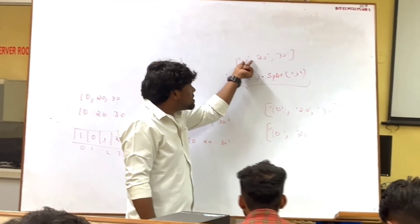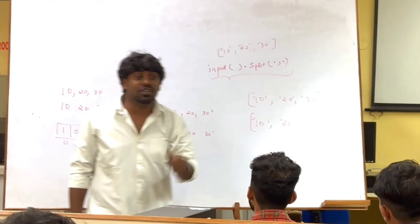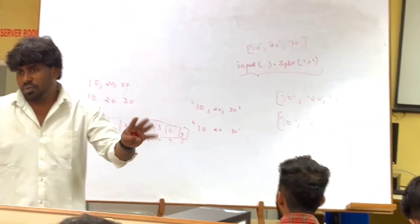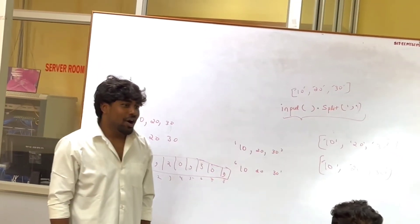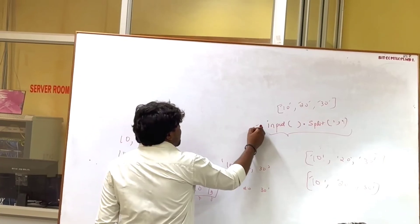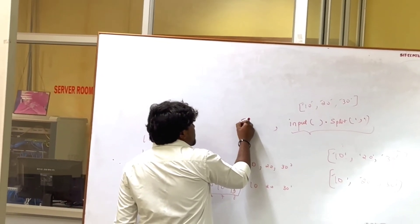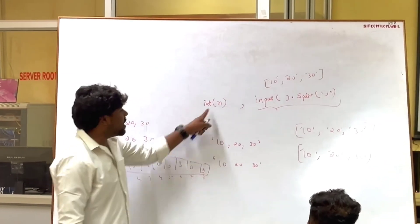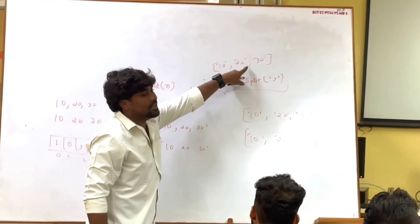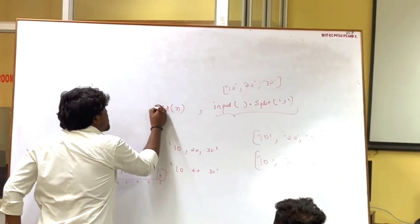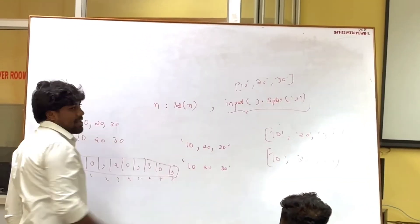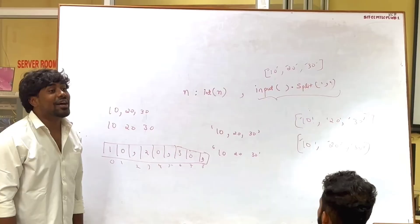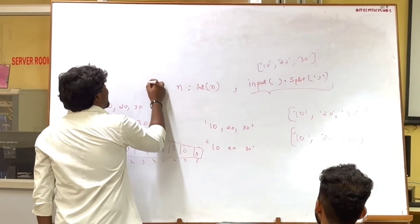Now this iterable object should be converted — each data should be converted to integer, or whatever data type you want. How to convert it? I will write int(n) for each element. I will use a lambda function — lambda n: int(n) — to do this conversion.